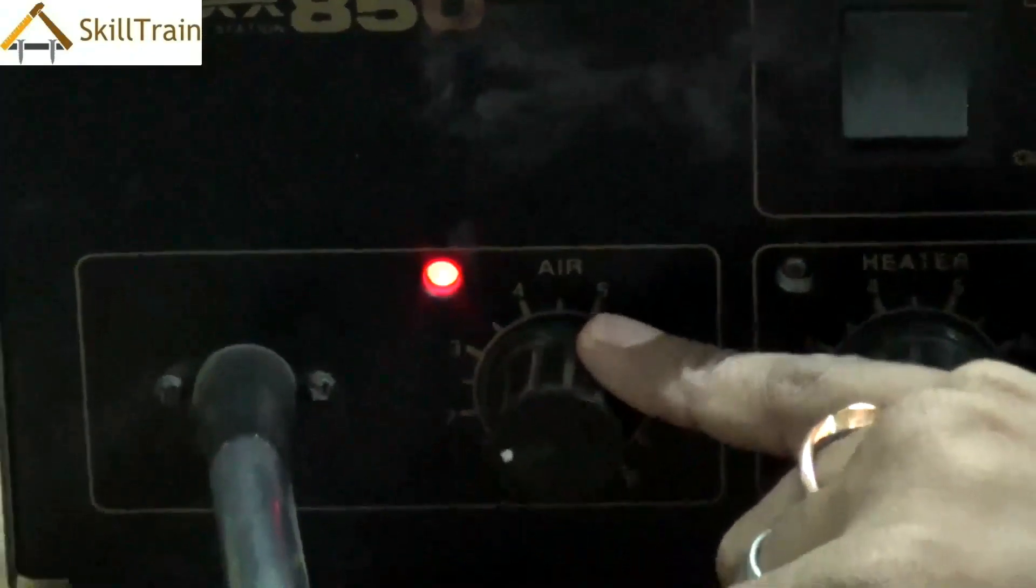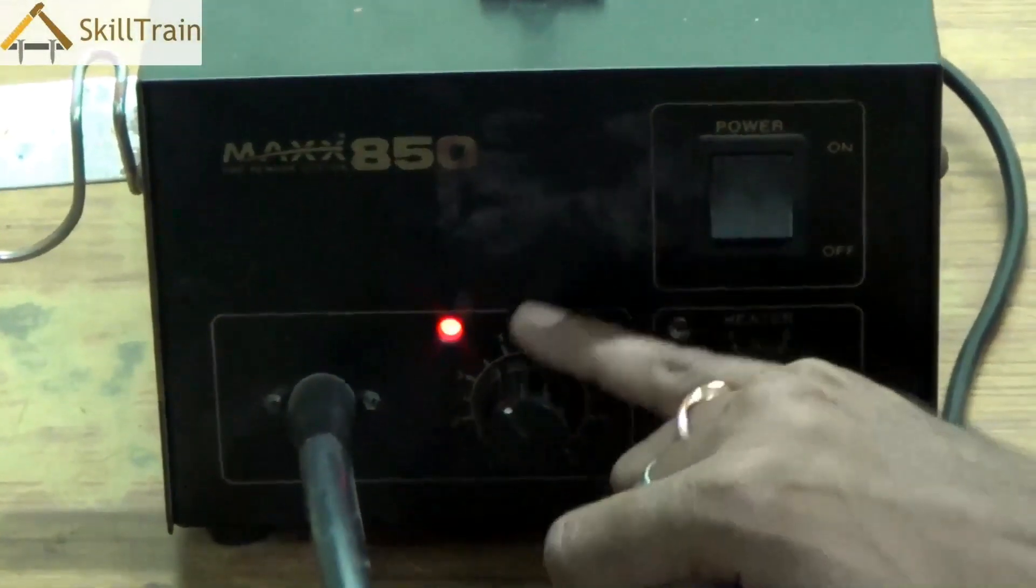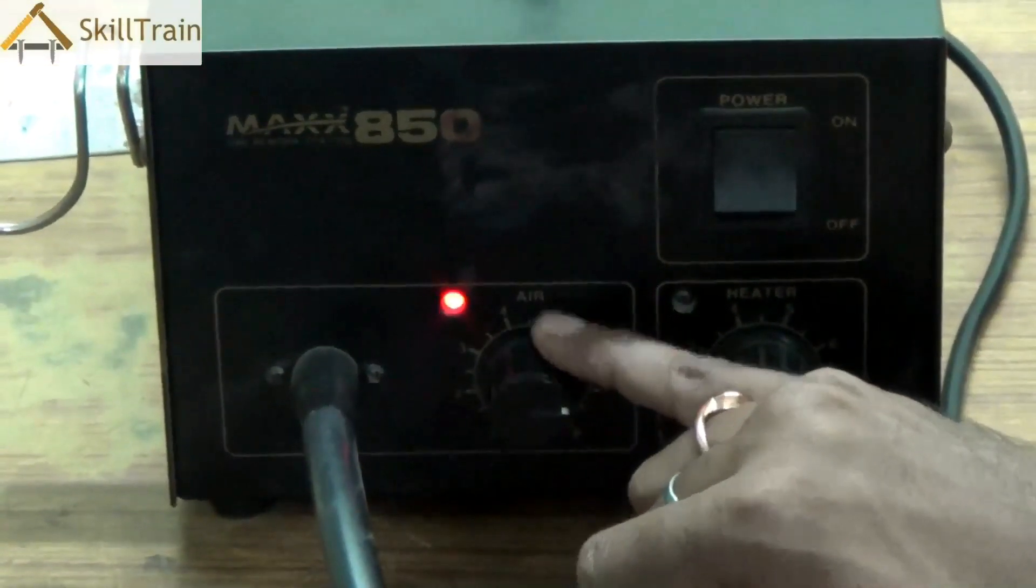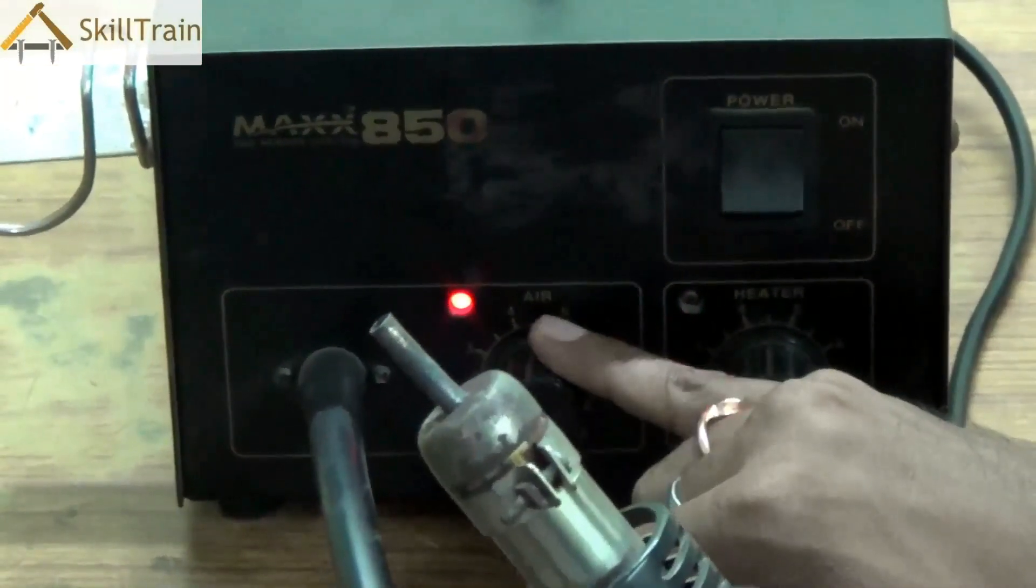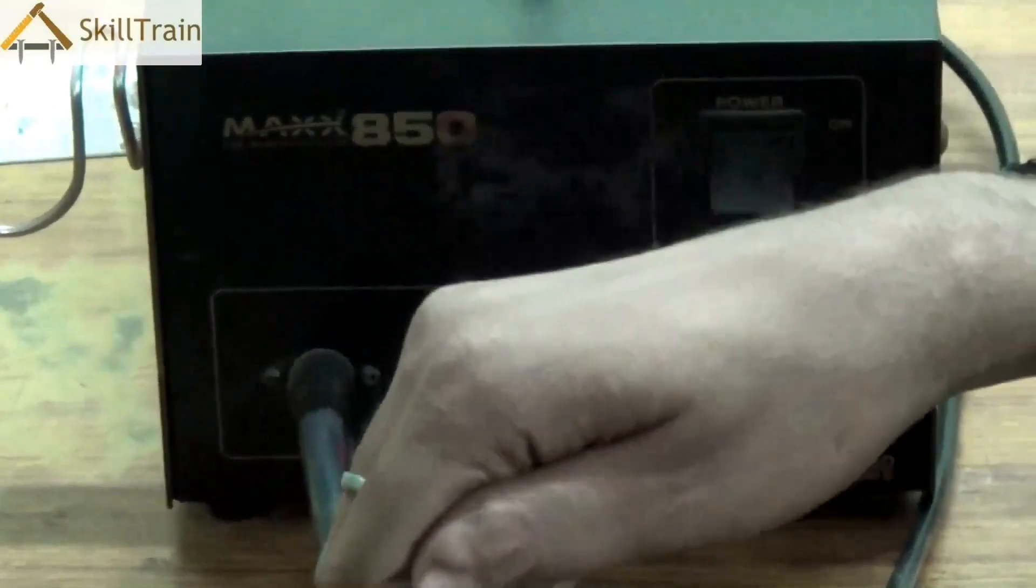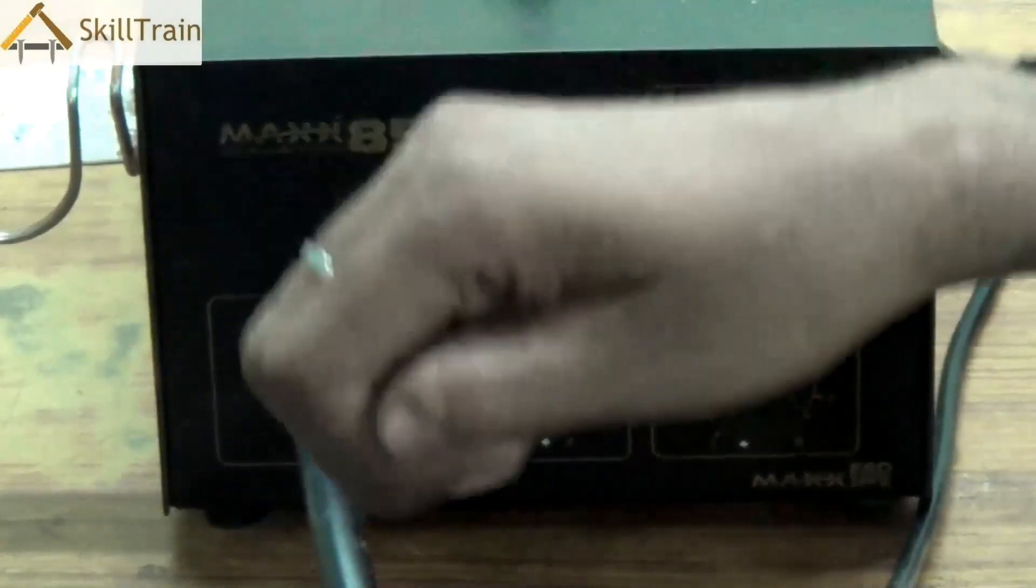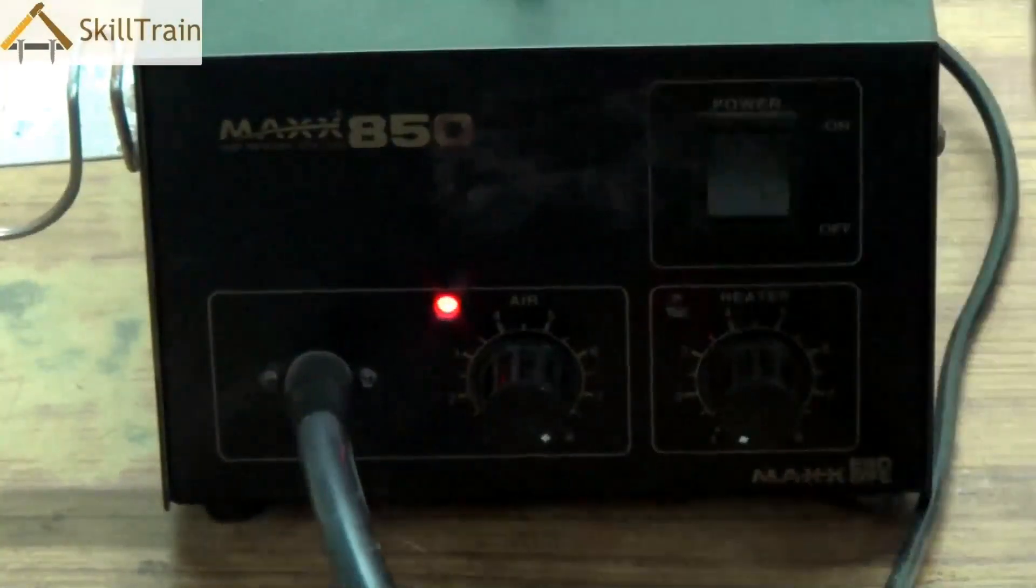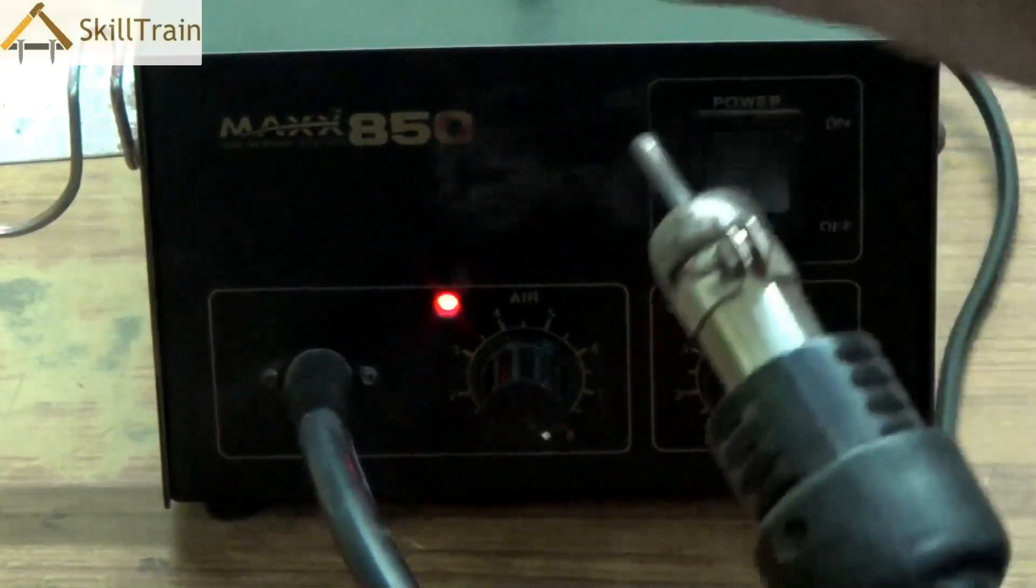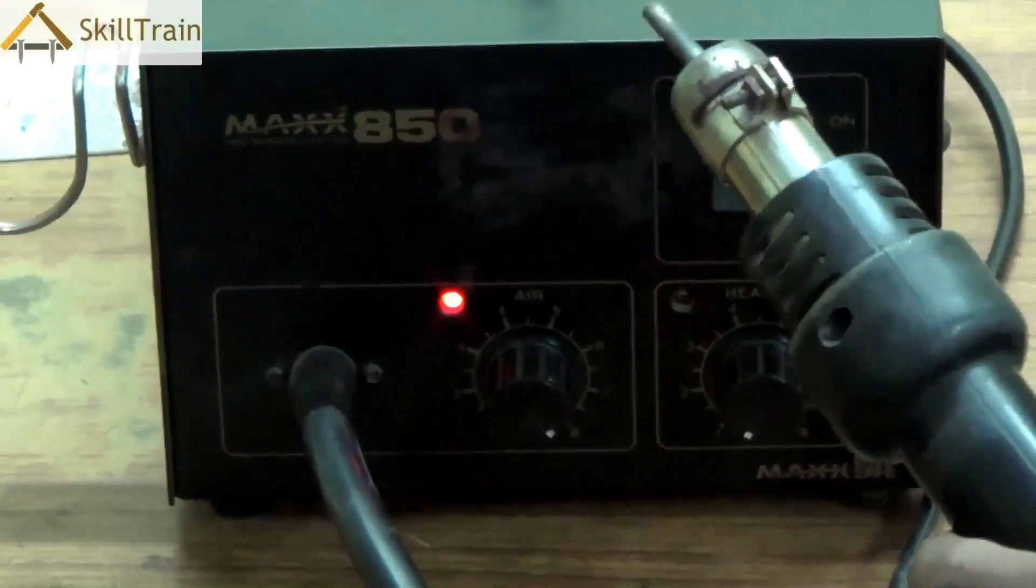Now once we do this, the air supply can be turned on or regulated depending on the requirement. So as you can see, as I increase the knob or as I turn the knob towards the higher end, you can feel the air coming out of the nozzle. So depending on the requirement, depending on what is the amount of airflow that is required, you can turn the knob and set it in the required position. And the nozzle is where you will be able to feel the air.